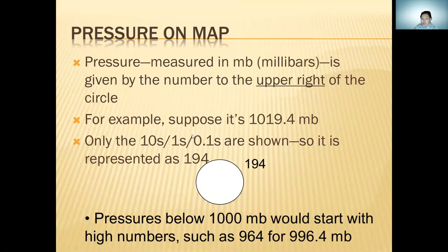Pressure on map: pressure measured in millibars is given by the number at the center of the circle. For example, this is normal pressure. Only the tens, ones, and 0.1 are shown, so it is represented as 194.